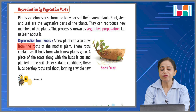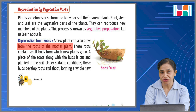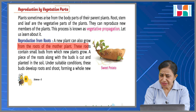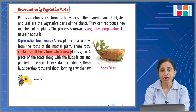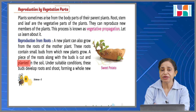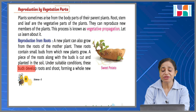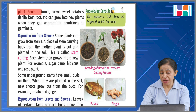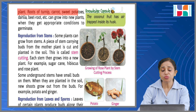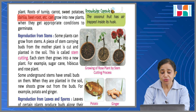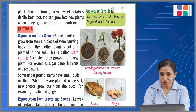A new plant can also grow from the roots of the mother plant — you can see this in the picture. These roots contain small buds from which new plants grow. A piece of root along with the buds is cut and planted in the soil. Under suitable conditions, these buds develop roots and shoots, forming a whole new plant. Roots of turnip, carrots, sweet potatoes, dahlia, and beetroot can grow into new plants when they get appropriate conditions.